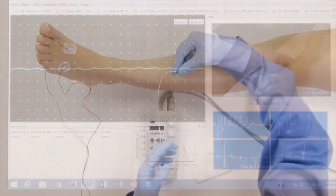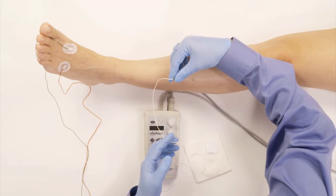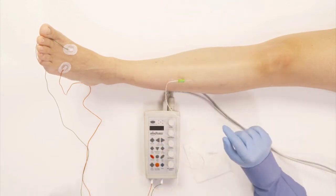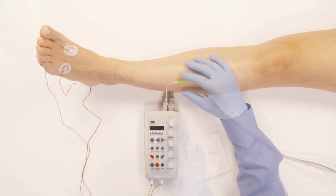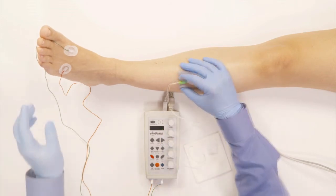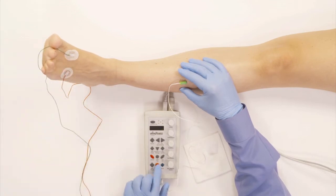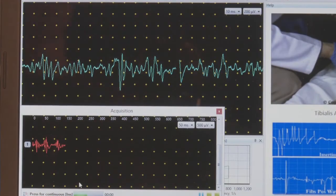And I stick the muscle like so. Here we go. Now the needle is inside the muscle. I do the insertional activity. Now I ask her to activate the muscle a little bit and I start acquiring. Go ahead.